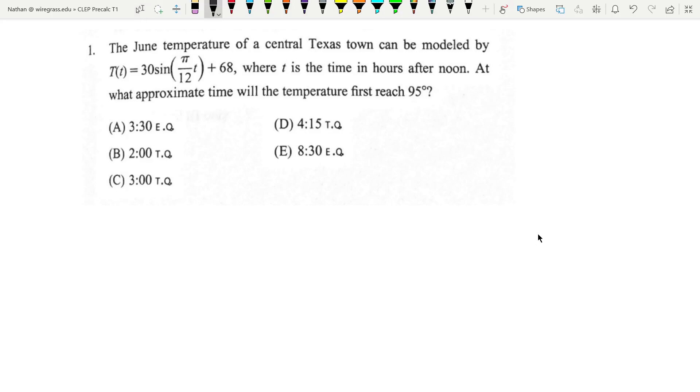The June temperature of a central Texas town is modeled with this sine function, and T is time in hours after noon. It's asking when will it first reach 95 degrees?